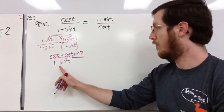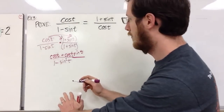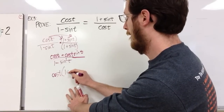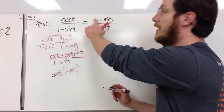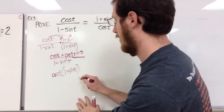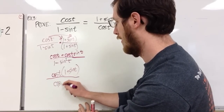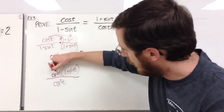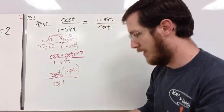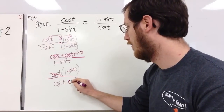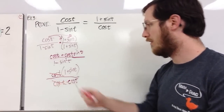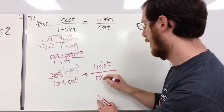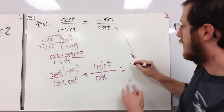Now I can replace 1 − sin²(t) on the bottom with cos²(t) from the Pythagorean identity. On top I'll factor out cos(t), leaving cos(t)(1 + sin t) over cos²(t). Seeing that our goal has (1 + sin t) over cos(t), it makes sense to leave it factored. We've got one factor of cos in the numerator and two factors of cos in the denominator — cos²(t) = cos(t) · cos(t) — so we cancel one factor. What we have left is (1 + sin t) / cos(t), which is exactly what we were asked to prove.